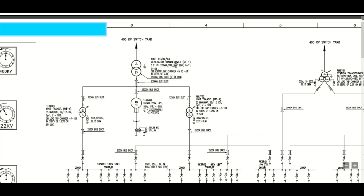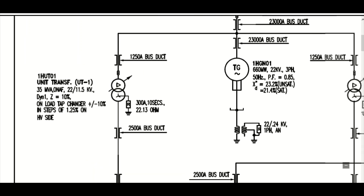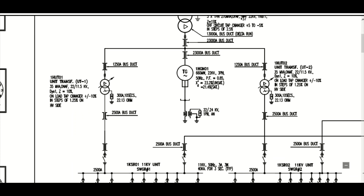To run the auxiliary systems inside the power plant, we need auxiliary supply. Here are the auxiliary transformers — these are the unit auxiliary transformers. Here, unit transformer U1 rating is 35 MVA. As you can see, the voltage is stepped down from the generation voltage of 22 kV to 11.5 kV.